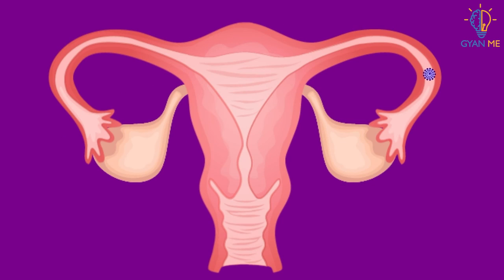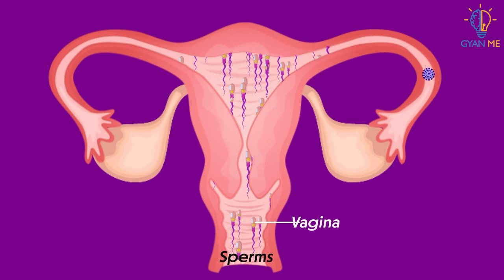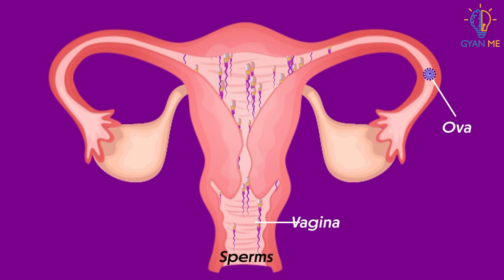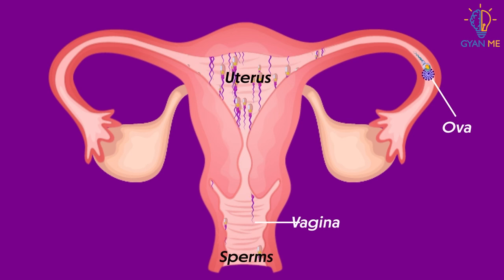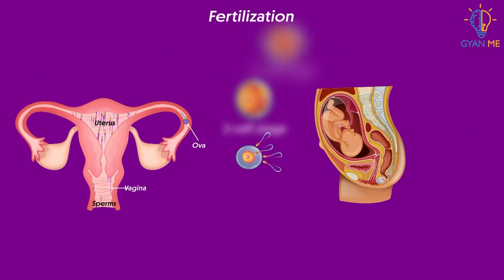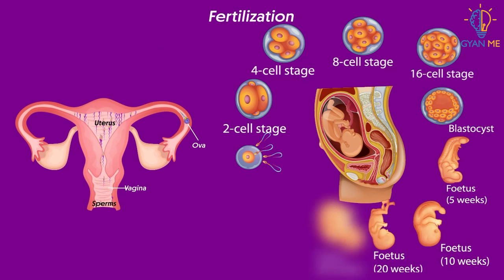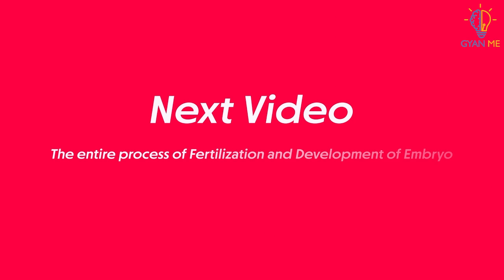Now students, during sexual intercourse, sperms ejaculated from males enter the female vagina and swim through the vagina to reach the ova or egg present in the female uterus. Fertilization happens here and forms the embryo. So in our next video, we will see the entire process of fertilization and development of the embryo.